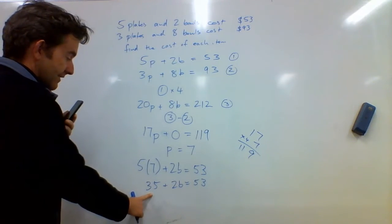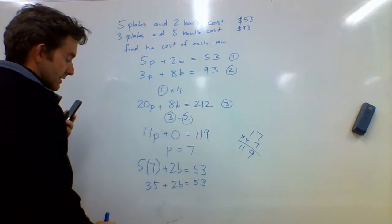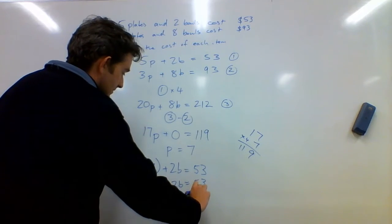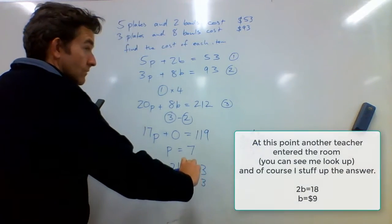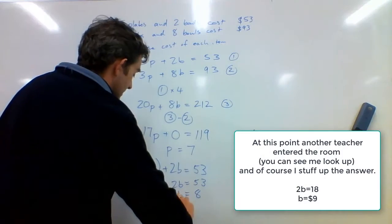Now I need to subtract that 35 from the other side to get rid of it. 2b equals 8, so b equals 4.